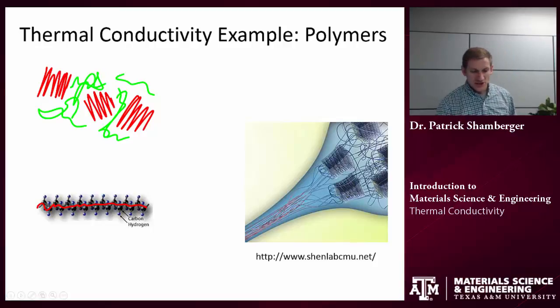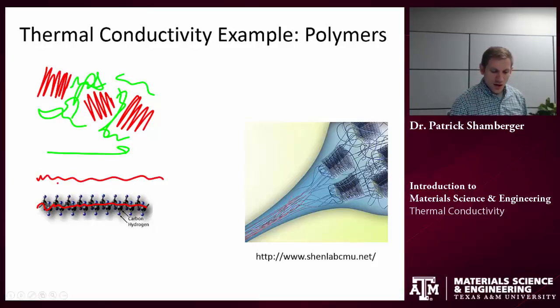So if I want to transport heat through this material, how does it have to be transferred? A lot of these bonds that I'm going to see are going to be the relatively weaker van der Waals secondary bonds between polymer chains.